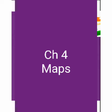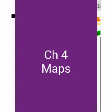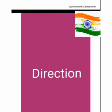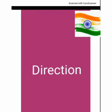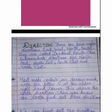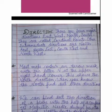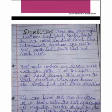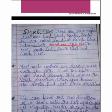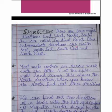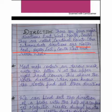We will continue our topic on the components of a map, and today's topic is directions. There are four major directions: east, west, north, and south. They are called cardinal points. Other intermediate directions are northeast, southeast, southwest, and northwest.